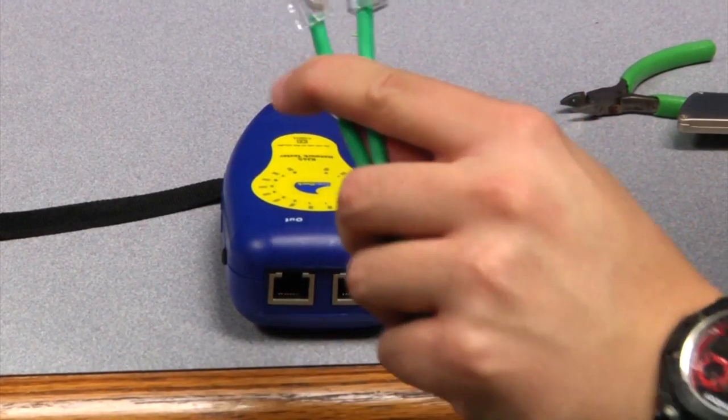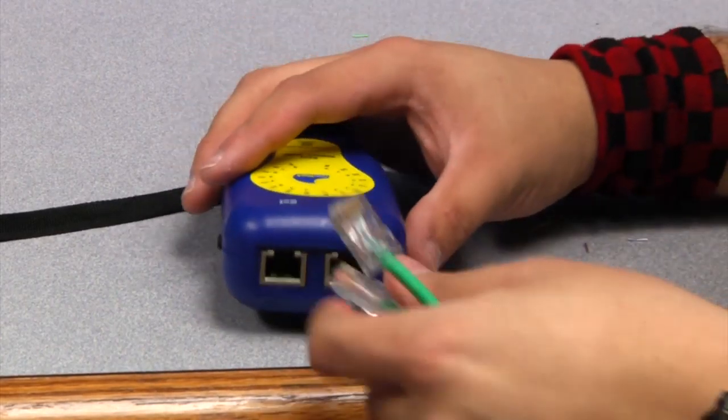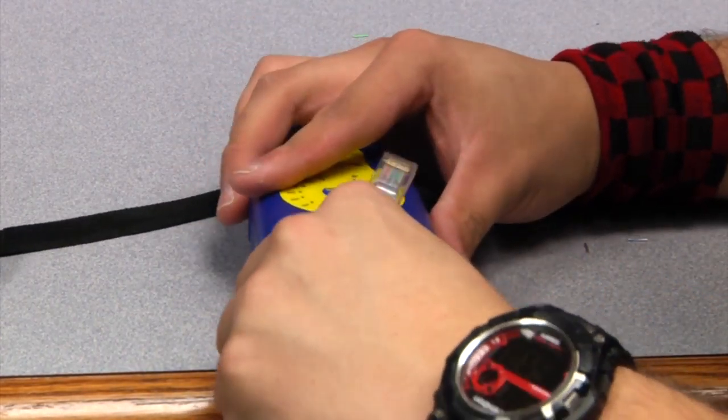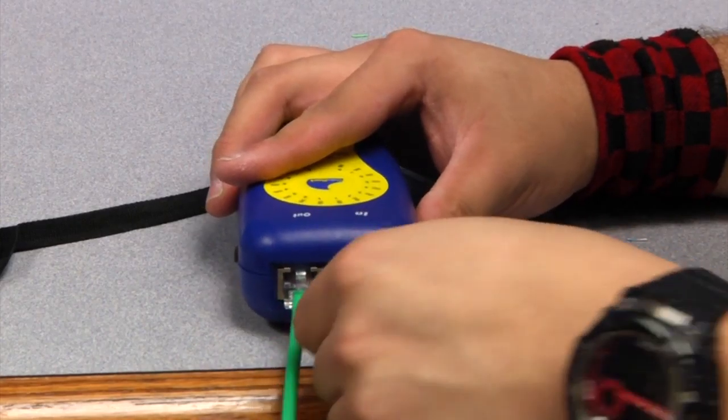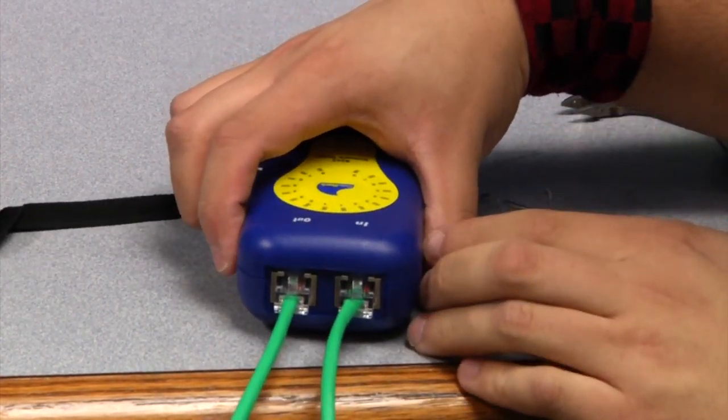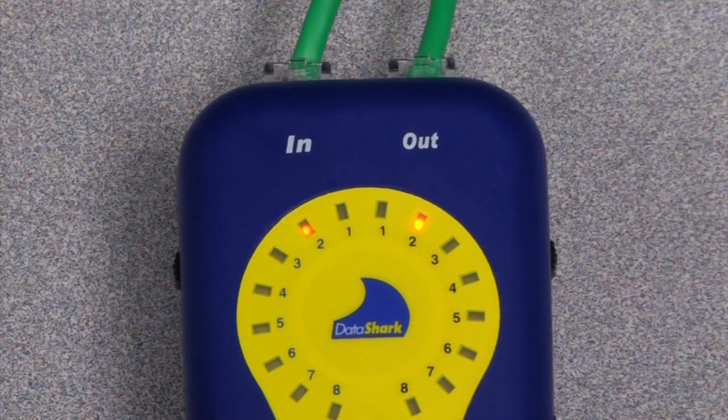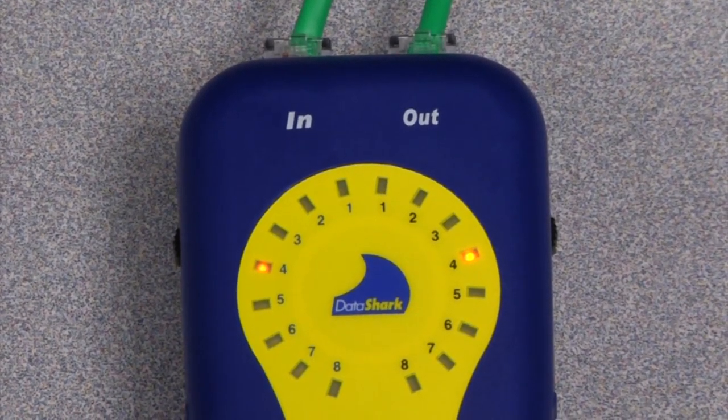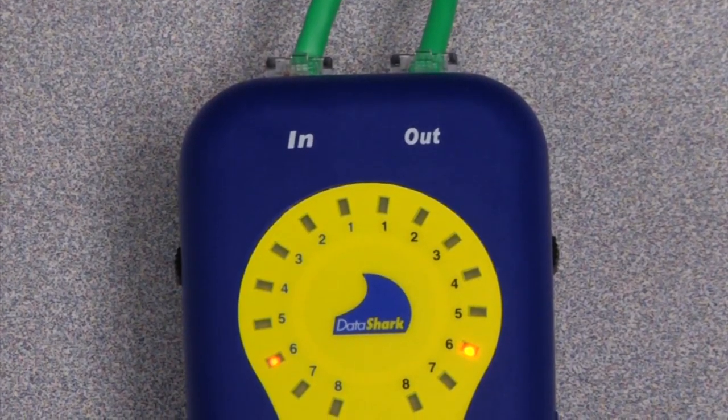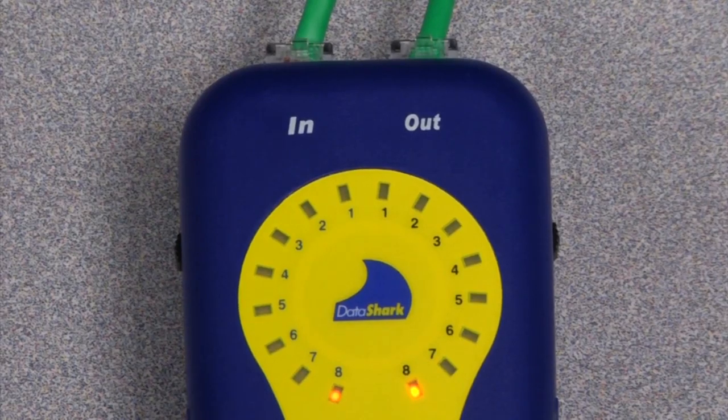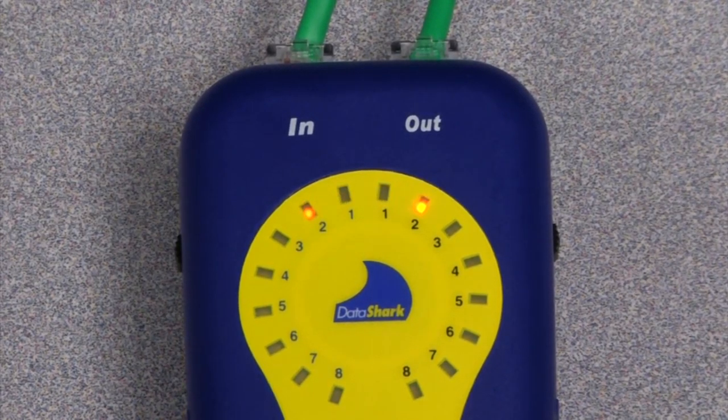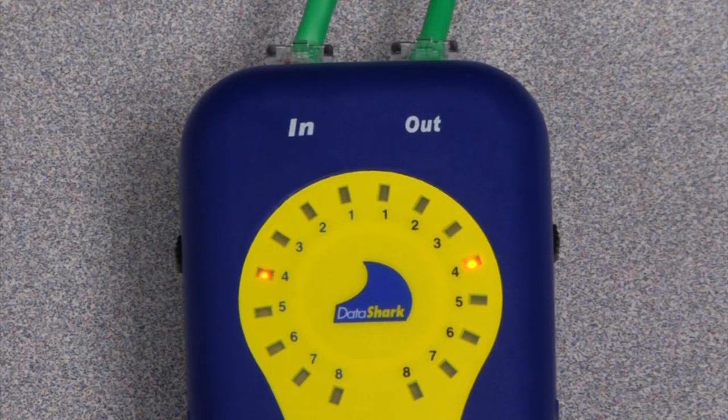After you have both ends terminated, you're going to want to test them. You just put them in the tester here and turn it on. You're going to look at both lights on both sides to see if they match up. They'll count from one to eight. And as you can see, this cable is terminated the right way.